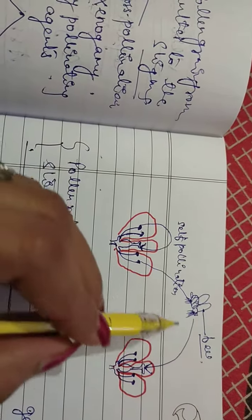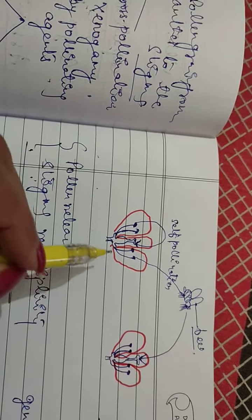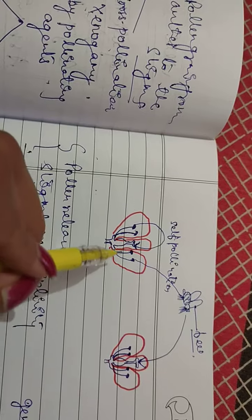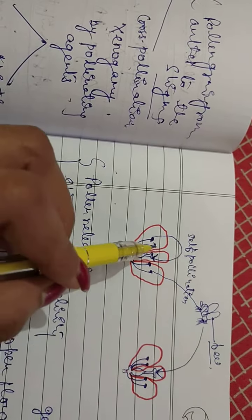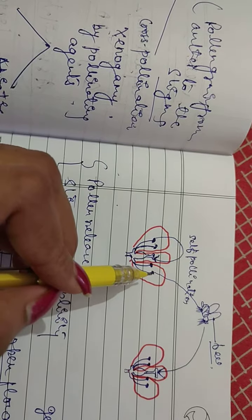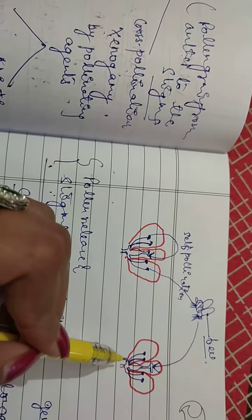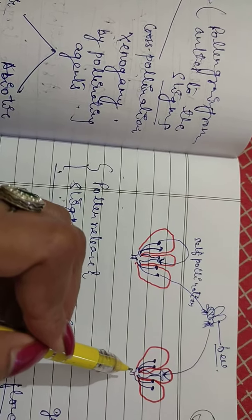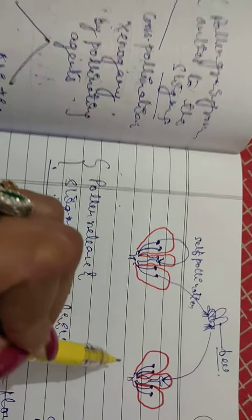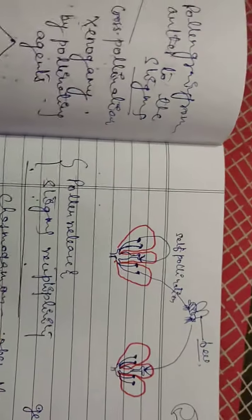This is insect pollination by bees. You can see here that it is the transfer of pollen from the anther of one flower to the stigma of another flower belonging to a genetically different plant. This is an important point to remember in cross-pollination.